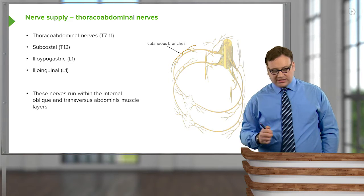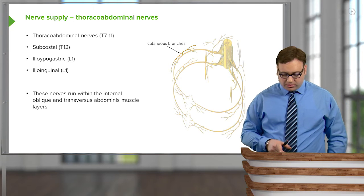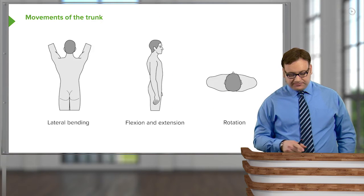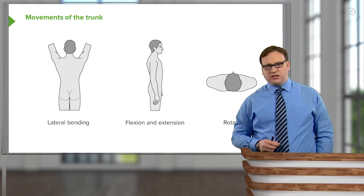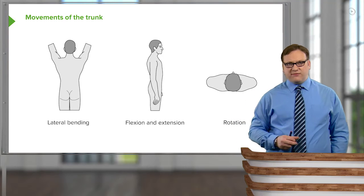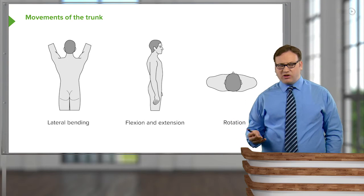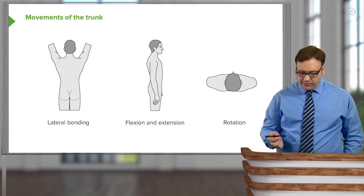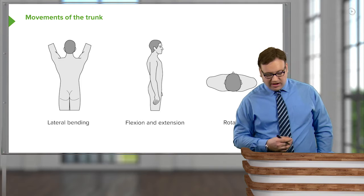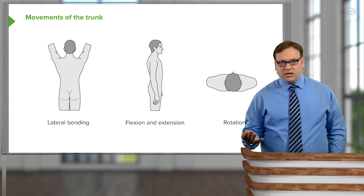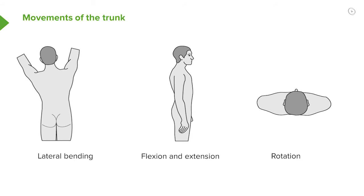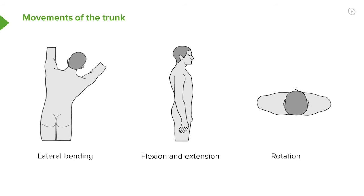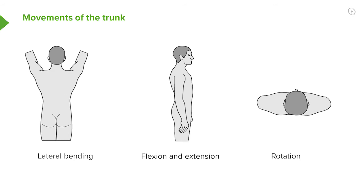Here we can see some of those thoraco-abdominal nerves. When we looked at the muscles, we noted the various movements of the trunk, and here we can see where these muscles contribute. We have lateral bending, where the trunk is moving to the left and to the right — moving laterally.